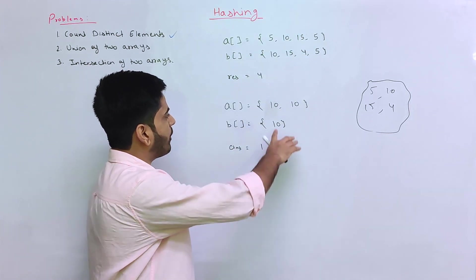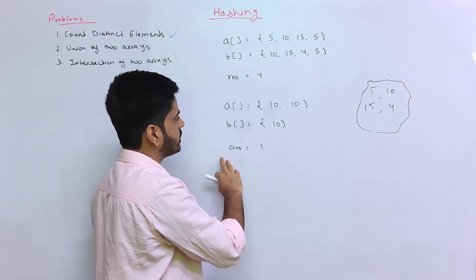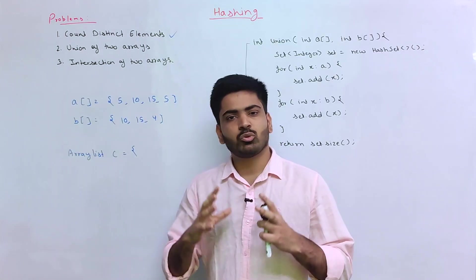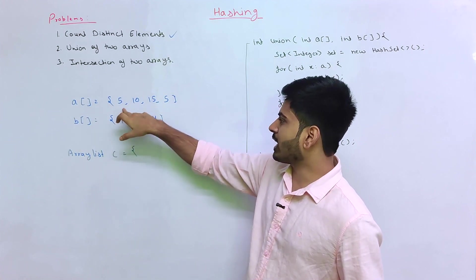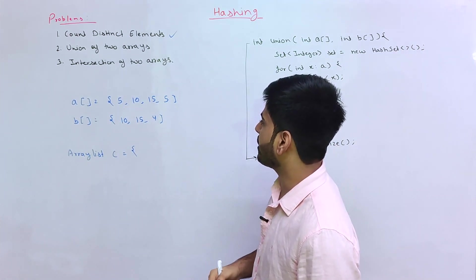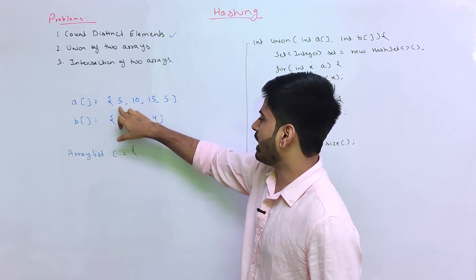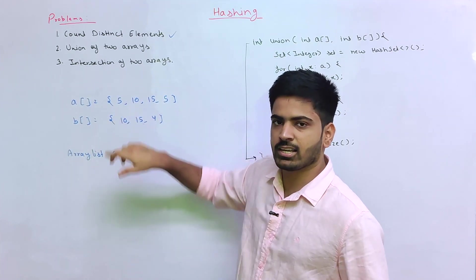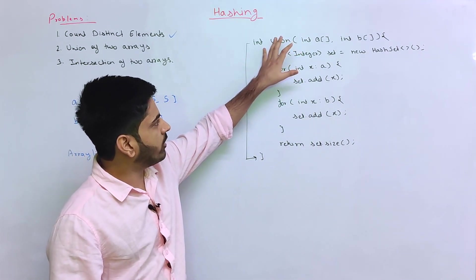To find the union, you use a set. This question can be solved in multiple ways. For example, you can take two arrays, loop through each array, and add all elements to a set — since the set only keeps distinct elements. You add the first array, then the second array. If 5 appears in both arrays, the duplicate 5 will not be added. You continue to 10 and add all unique elements, then return the size. This is union using a set.